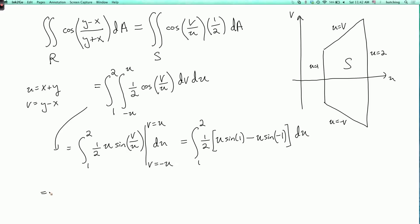And I can simplify that a little bit. The sine of minus 1 is minus sine of 1. So I can write this whole thing as the integral from 1 to 2 of u sine of 1 du.